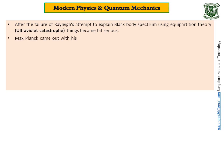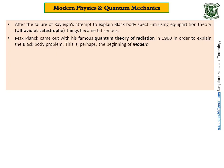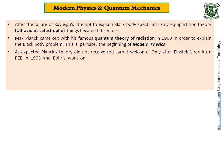Max Planck came out with his famous theory called quantum theory of radiation in 1900 in order to explain the black body problem. This is perhaps the beginning of modern physics because in his theory he had a modern concept called quantization of energy. As expected, Planck's theory did not receive red carpet welcome.